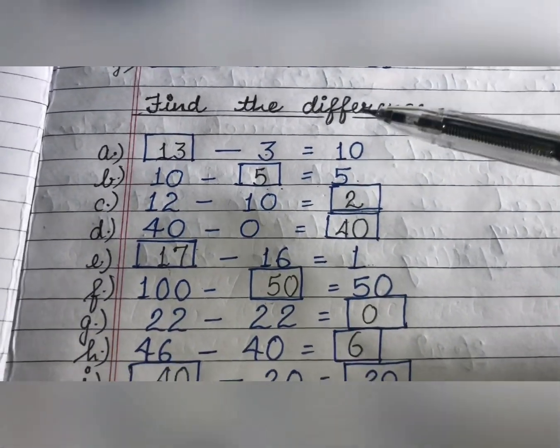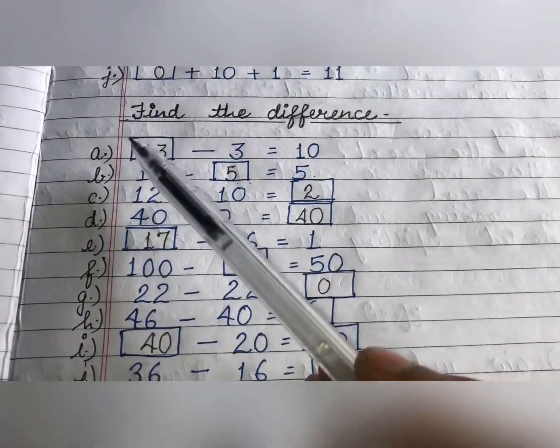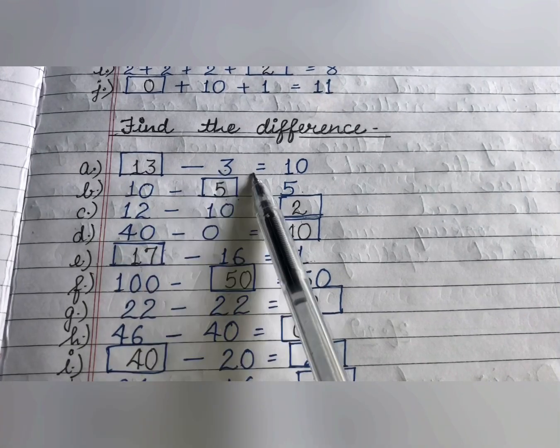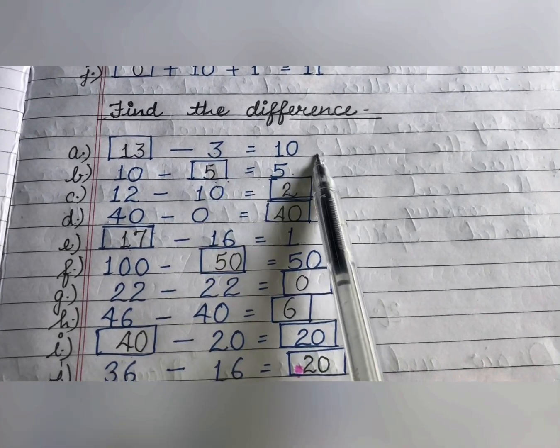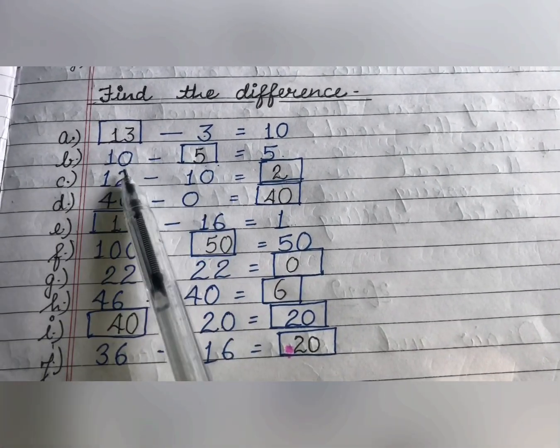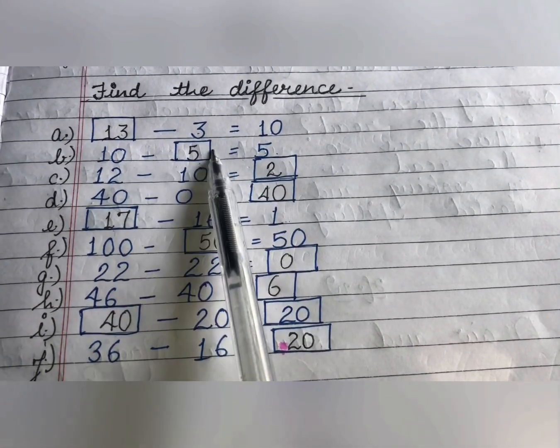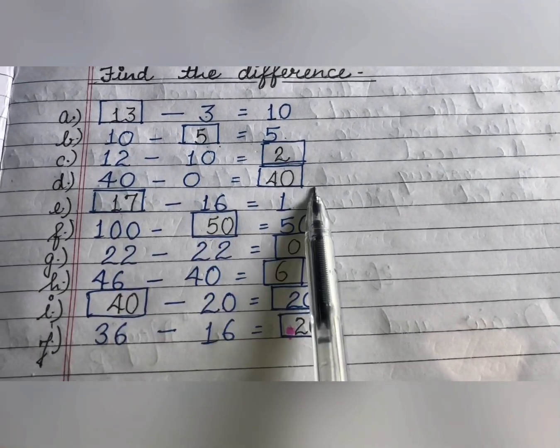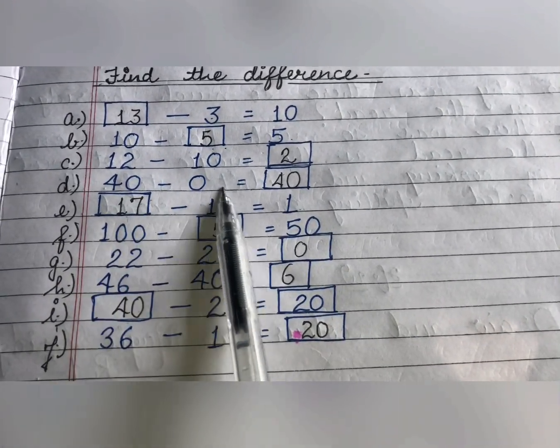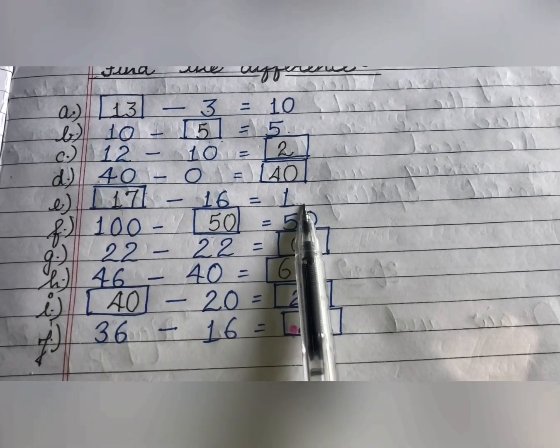Now, find the difference here. Here, only some subtraction things are given like 13 minus 3 is equal to 10. Which number do you subtract 3 from to get 10? Simple 13. Now, what do you subtract from 10 to get 5? 5. 12 minus 10, 2. 40 minus 0, 40. Which number do you subtract 16 from to get 1? 17.